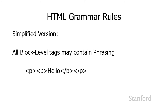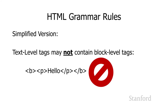All block level tags may contain phrasing. So if you've got a paragraph, you can totally have bold and italic tags inside — that's fine. Text level tags, however, may not contain block level tags. An italic element cannot contain a paragraph element; a bold element cannot contain a paragraph. That's illegal.